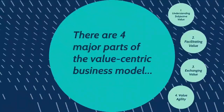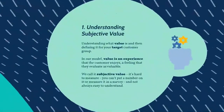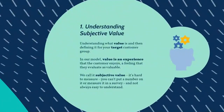There are four major parts of the value-centric business model. The first is understanding what value is and then defining it for your target customer group. In our model, value is an experience that the customer enjoys — a feeling that they evaluate as valuable. We call it subjective value. It's hard to measure. You can't put a number on it or measure it in a survey, and it's not always easy to understand.